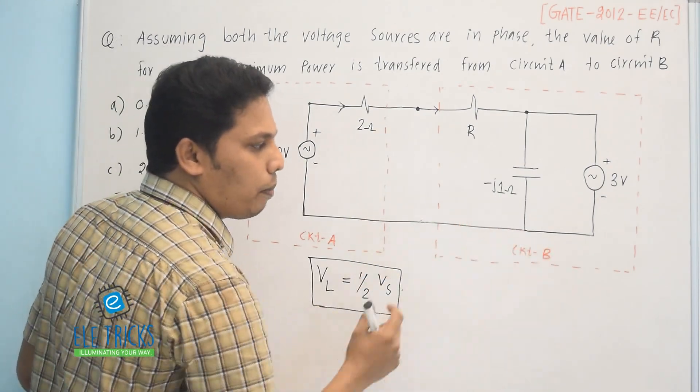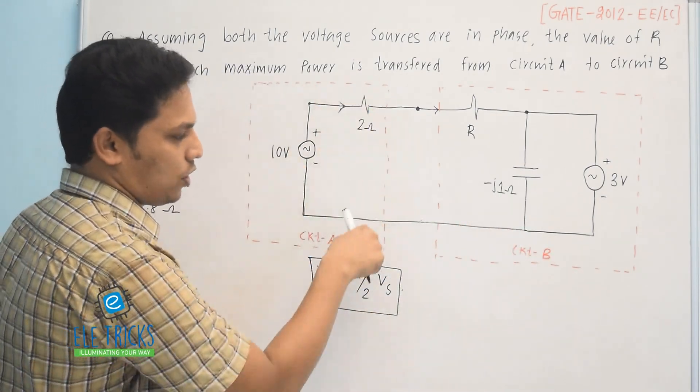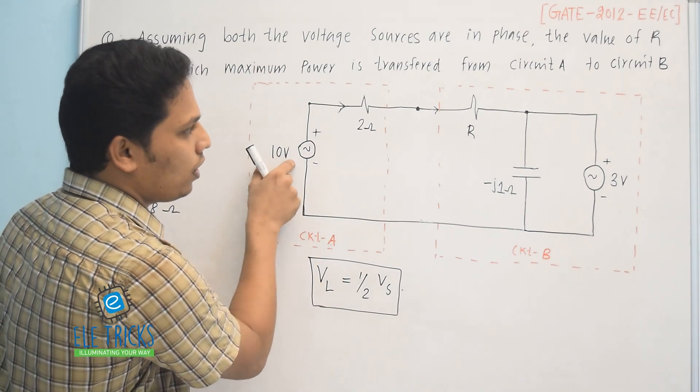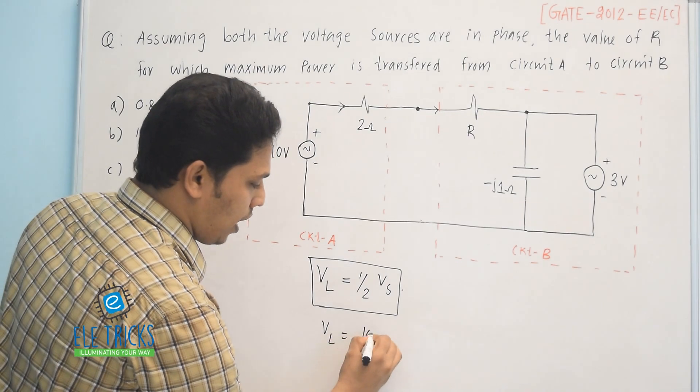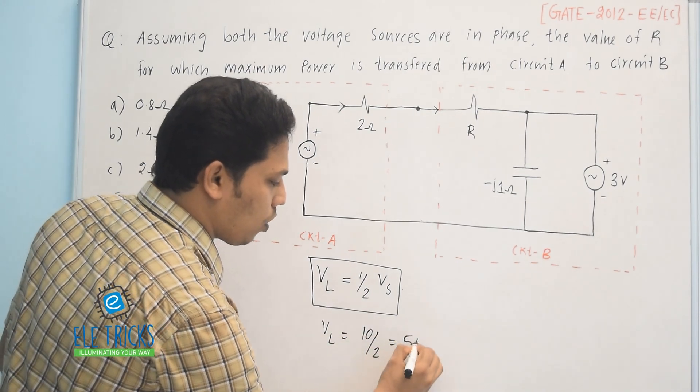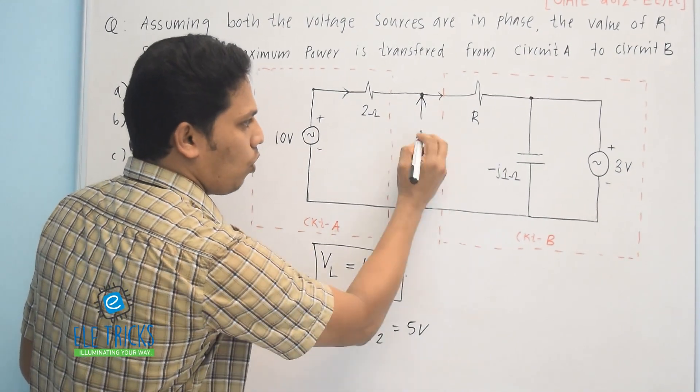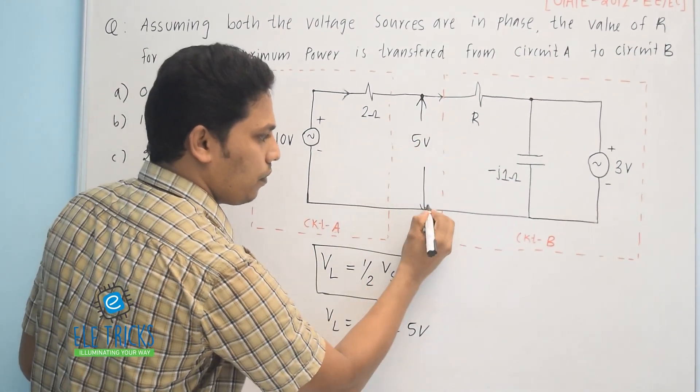I am considering circuit B as a load and circuit A as a source. So the source voltage is 10 volt and the load voltage is equal to 10 divided by 2, that is equal to 5 volt. This means that the voltage across the load is 5 volt.